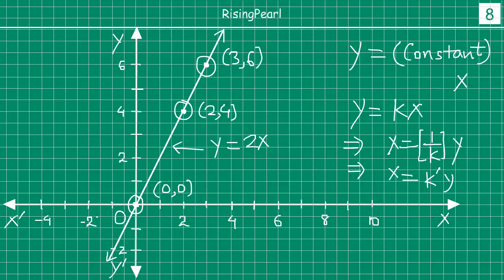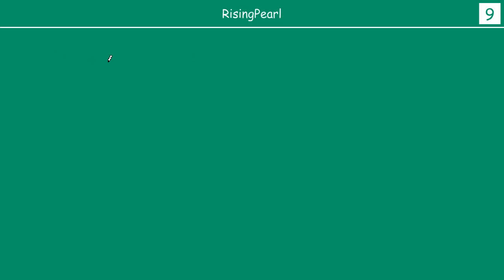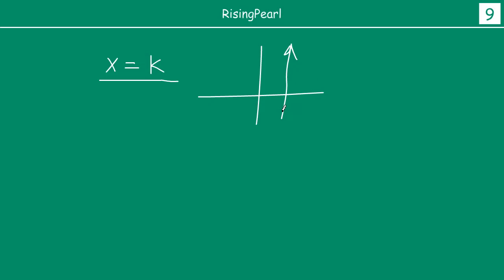Now before we wrap up this series, let us do a quick recap. If you are given x equals to some constant, that line will be parallel to the y-axis. If the constant is positive it will be on the positive side of x; if the constant is negative, the line will be on the negative x side.